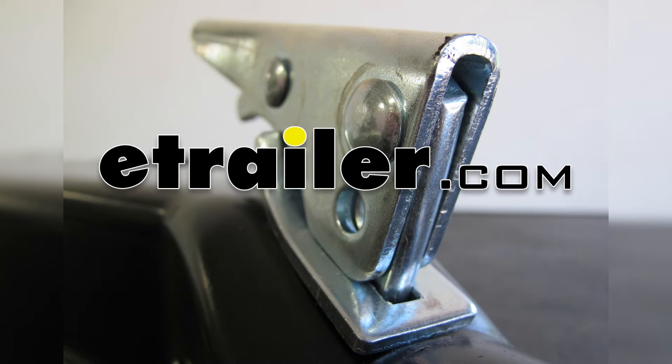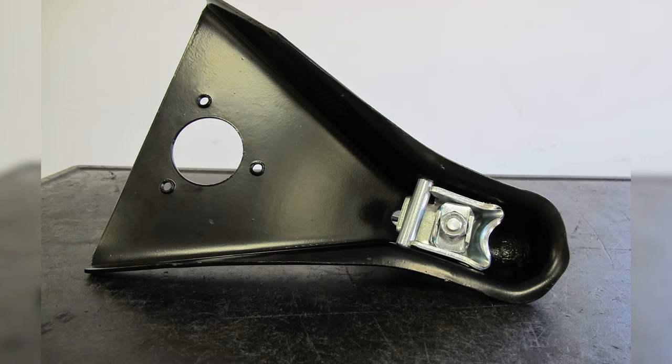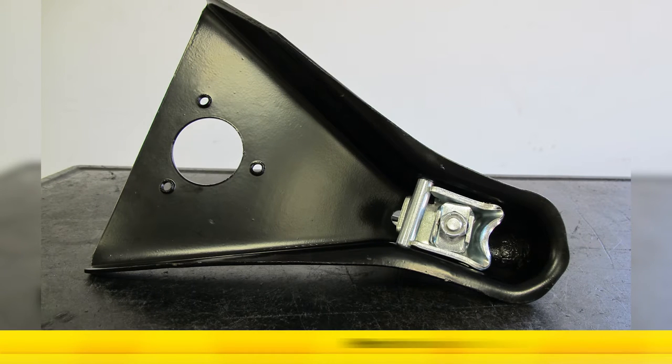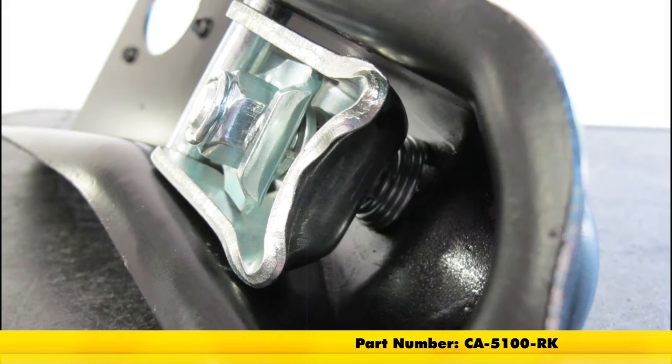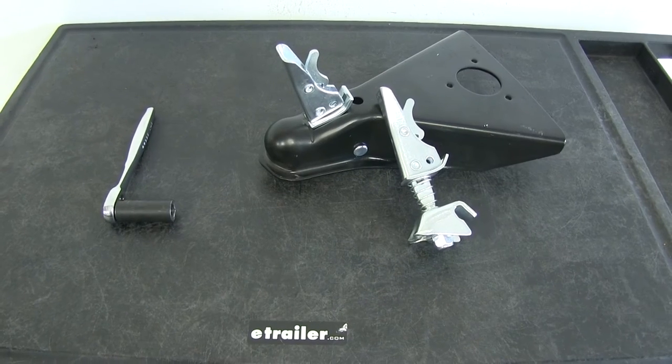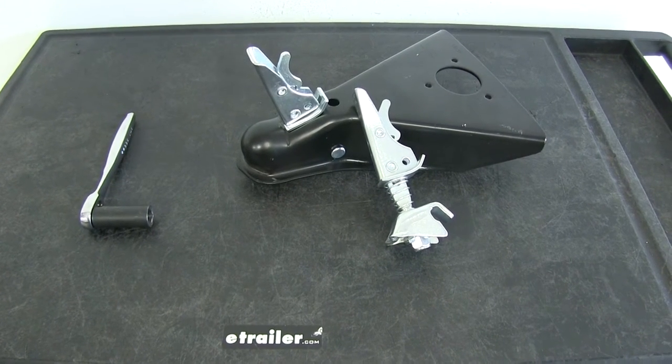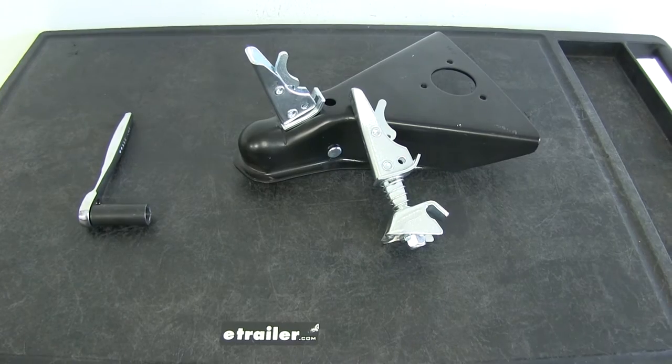Today we're going to be taking a look at and showing you how to repair an A-frame trailer coupler. The part number we're using today is CA-5100-RK. This is the repair kit for the E-trailer and RAM-style A-frame couplers. It also works on several other types of A-frame couplers as long as they use that trigger latch design. This works for 2-inch balls and has a 5,000-pound weight capacity.